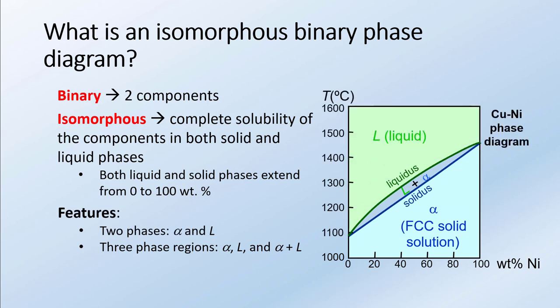We can see this on the example plot here to the right — a copper-nickel phase diagram. On the x-axis we have weight percent nickel, and on the y-axis we have temperature. No matter how much nickel we add, we are able to dissolve or form a solid solution all the way up to 100 percent nickel. We have pure copper on the left-hand side and pure nickel on the right-hand side, and we can do the same thing in the liquid region.